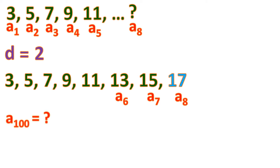But how about finding the 100th term? You wouldn't want to keep adding 2 all the way to the 100th term manually. The fastest way is to find the general formula for the nth term, which we call a sub n. So let us derive it.